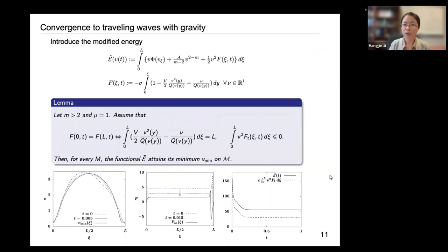For the case when gravity is included, we do need to incorporate a few additional assumptions. And under the modified energy definition and the additional constraints that we imposed on this function F, we show that for every mass M, the functional E tilde would attain its minimum, which is the traveling wave solution that we're interested in. Here we present a typical convergence to traveling wave simulation starting from some initial data, and the corresponding F and E tilde satisfies the analytical results that we derived.